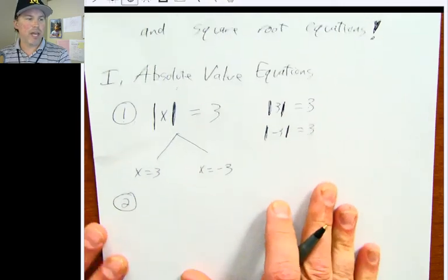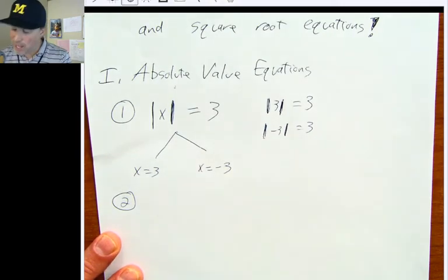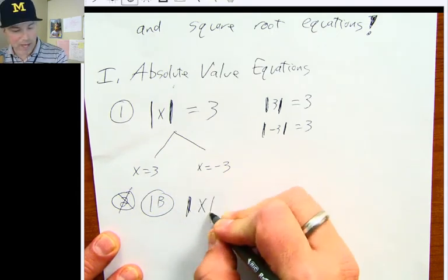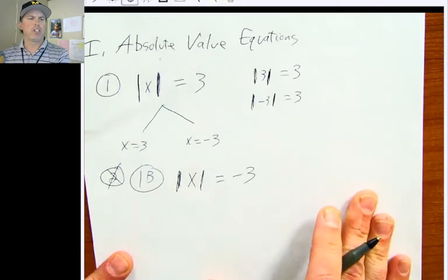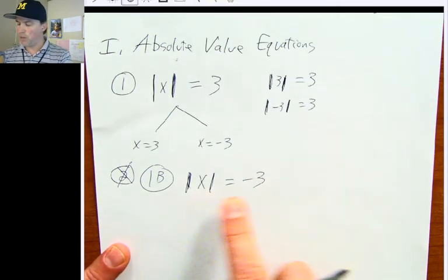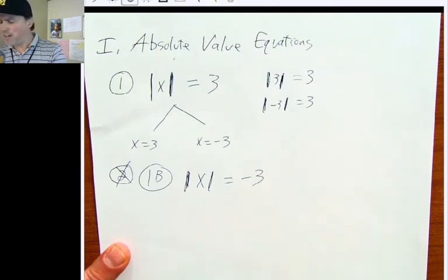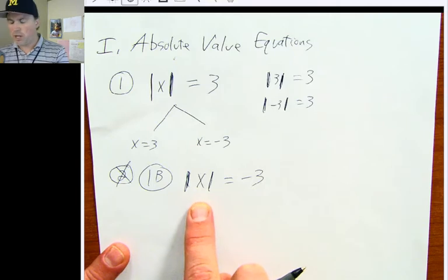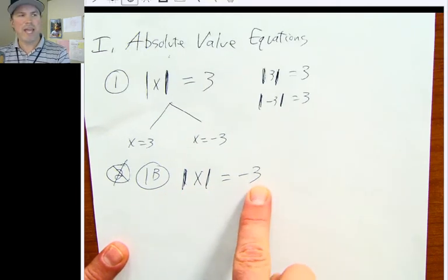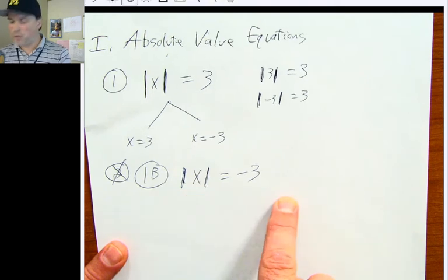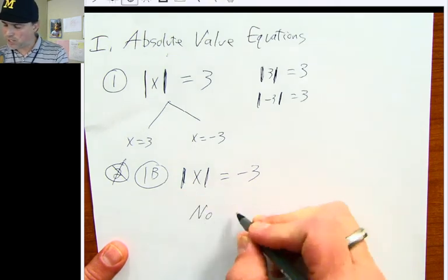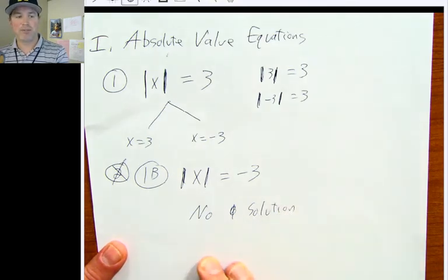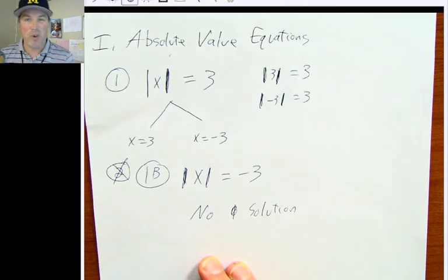Before example two, let's look at example 1b: the absolute value of x equals negative three. When is the absolute value of a number equal to negative three? Well, the definition of absolute value is distance from zero, and distance is always positive. So your distance from zero can never be negative. If you ever have an absolute value equal to a negative number, you answer no solution, because no numbers have an absolute value of a negative number of any kind.